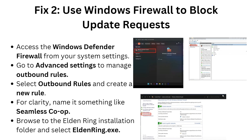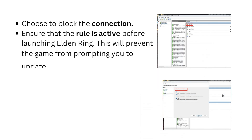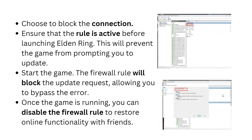Fix two: use Windows Firewall to block update requests. Open Windows Defender Firewall from your system settings and go to advanced settings to manage outbound rules. Select outbound rules to create a new rule. Name it something like 'seamless co-op update', browse to the Elden Ring installation folder, and select ElderRing.exe.